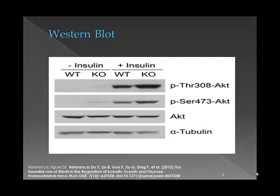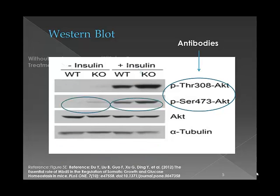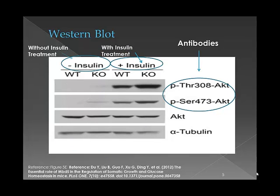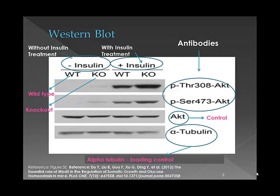This is a Western blot. This technique was used to identify the tissue mainly responsible for altered glucose homeostasis. This Western blot analysis shows the PAKT levels in the liver. Both PAKT S473 and T308 were increased with or without insulin treatment in the MBD-5 deficient livers compared with controls. In this diagram, KO stands for knockout mice and WT stands for wild type mice. The protein levels were analysed by Western blot with the indicated antibodies, and alpha-tubulin was used as a loading control.